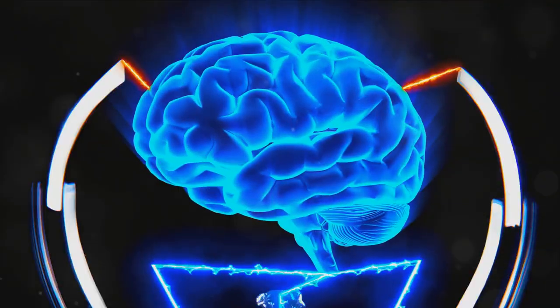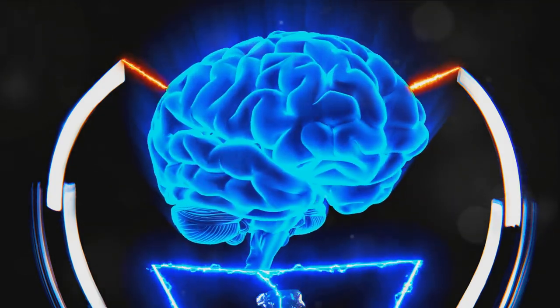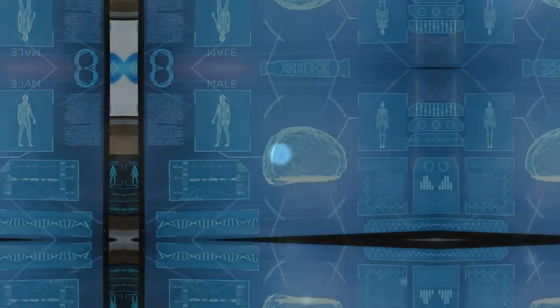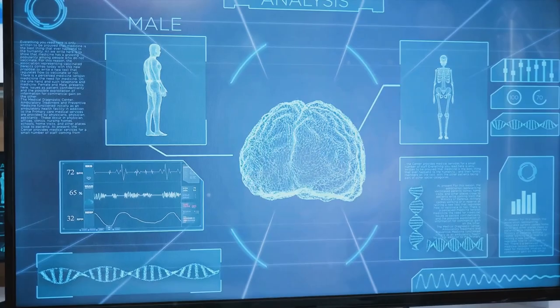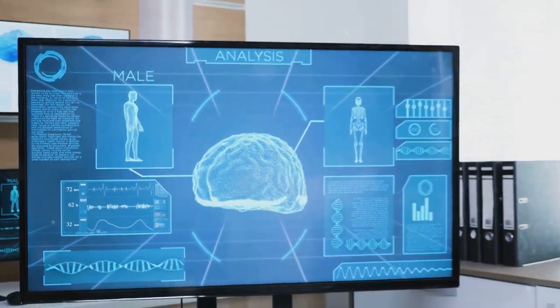So, a second brain could potentially revolutionize the way we think and process information. How can we build this second brain, you may ask? Well, the beauty lies in the process, which is as fascinating as the concept itself. Tiago Forte, in his book, lays out a step-by-step guide, which we will briefly explore.